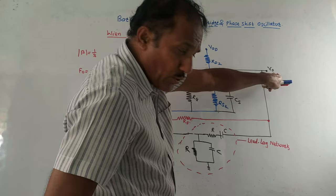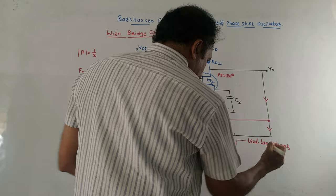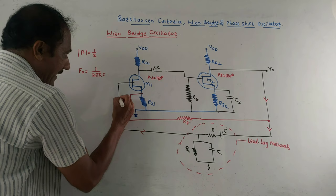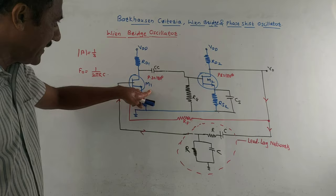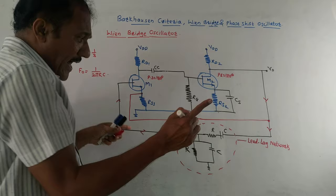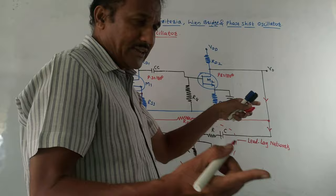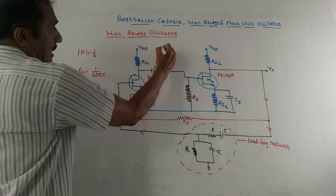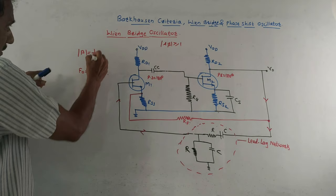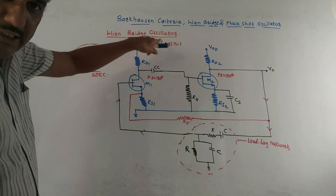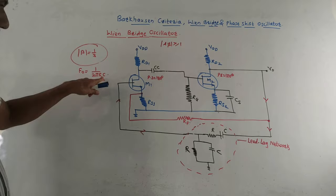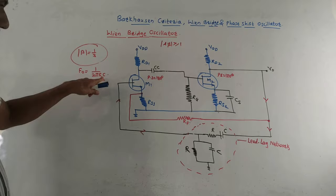The output V0 is taken and applied to the lead-lag network in the feedback path, which is then fed back to the input of MOSFET M1. The total circuit acts as a Wien bridge oscillator. The phase shift condition of zero or 360 degrees is satisfied by the two MOSFETs. The feedback factor beta must be one-third to satisfy |A·beta| ≥ 1. The frequency of oscillation is given by f0 = 1 / (2π·RC). That concludes unit number two.